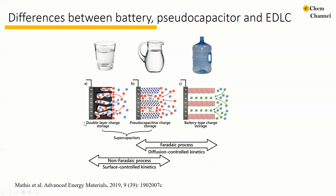In our previous tutorial video, we discussed briefly about the differences between electrical double-layer capacitor, pseudocapacitor, and batteries — mainly their differences based on electrochemical characteristics. In both pseudocapacitor and battery, charge transfer reactions occur across the electrochemical interface, so faradaic reactions occur during the process. The question is how to differentiate the faradaic process in a pseudocapacitor from that in a battery.